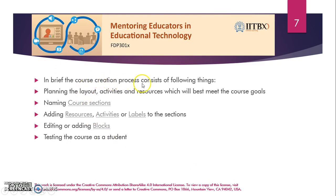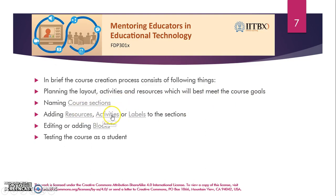In brief, the course creation process consists of the following things: first, planning the layout, activities, and resources which will best meet the course goals; then naming the course sections; adding resources, activities, or labels to the sections; editing or adding blocks; and testing the course as a student.